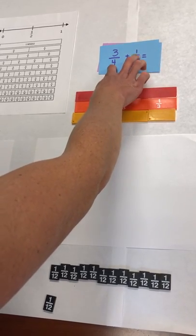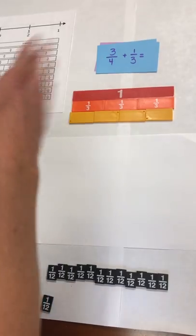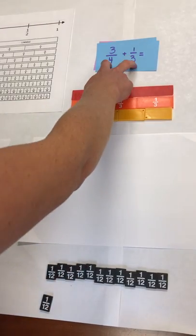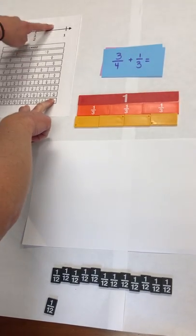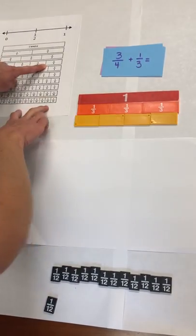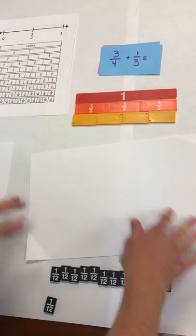You can already see three-fourths and one-third—both of these denominators are gonna have to change, so this is already a little bit more complex. Let's go back to benchmarks. Three-fourths is in between a half and one. One-third is closer to a half. So I know my answer should go over a whole.